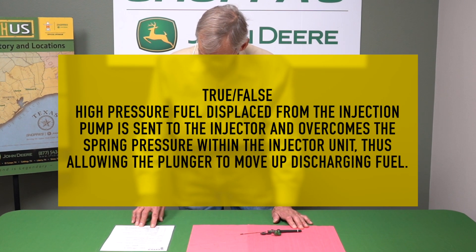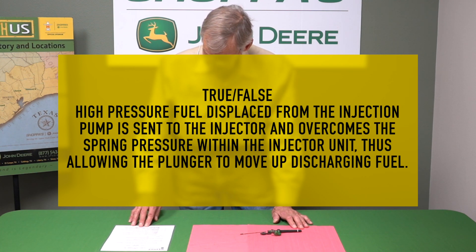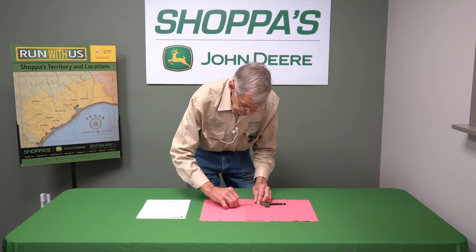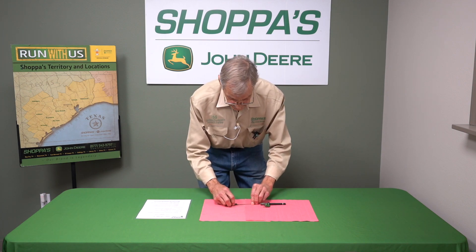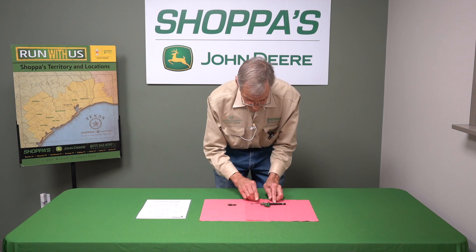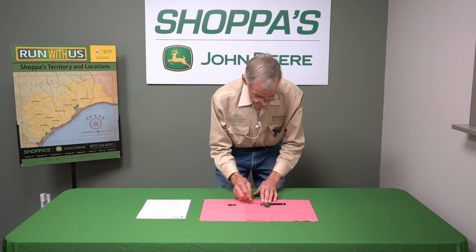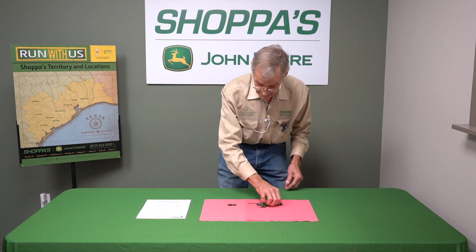Next statement: high pressure fuel is displaced from the injection pump, sent to the injector, and overcomes the spring pressure within the injector until it allows the plunger to move up, discharging fuel. That's true. It's going to build up pressure until it overcomes that spring, which allows the plunger to move up just for a split second and then back down, discharging the fuel out of the end of the nozzle. So that is true.